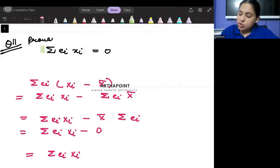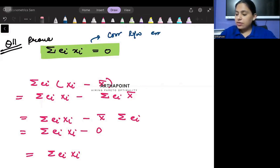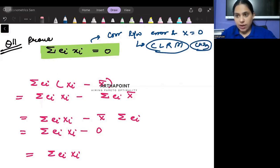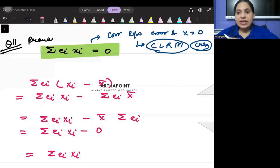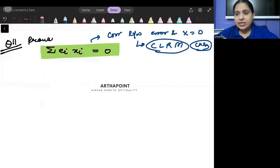So here it says prove that ∑ei*Xi = 0. In terms of language, it means that the correlation between the error term and X's is 0. This is one of the assumptions of classical linear regression model that you study as part of the next chapter, where we say that the correlation between the error terms and the X's is assumed to be 0, and its implication is that ∑ei*Xi should be 0.